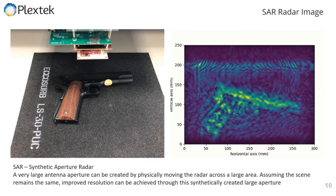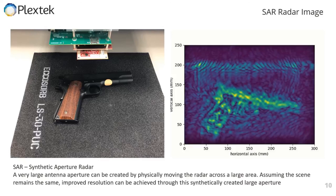I also wanted to touch on SAR radar imaging. SAR, which stands for Synthetic Aperture Radar, is an approach used to generate a very large antenna aperture and therefore very fine angular resolution from a physically very small radar. By physically moving the radar over a scene — for example, scanning it over a replica firearm — we're able to generate a detailed image. This image was actually generated when the replica firearm was placed inside a cardboard box, demonstrating the ability for hidden or concealed object detection by looking through the cardboard, which the RF signal is able to penetrate. This is a 2D slice in the 3D image we are able to generate.